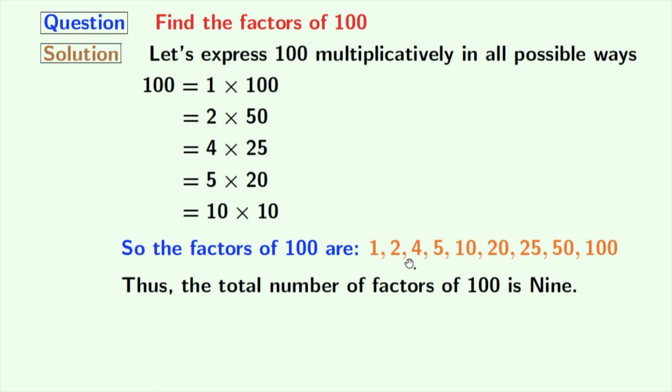Here, 2 and 5 are prime numbers because these two numbers do not have any other divisor than 1 and that number itself. So, we can say that the prime factors of 100 are 2 and 5.